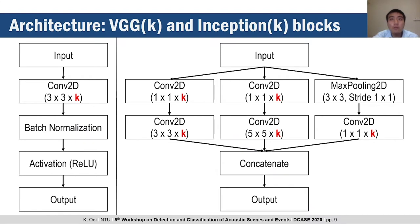For our submission, we made use of variants of VGGNet and InceptionNet. Both are made up of repeating blocks, referred to here as VGGK and InceptionK, where K represents the number of filters in each of the 2D convolutional layers in the blocks. On the left, we have the architecture of a VGGK block, which is a linear block of 2D convolution followed by batch normalization and activation. On the right, we have the architecture of an InceptionK block with its characteristic branching and concatenation structure.